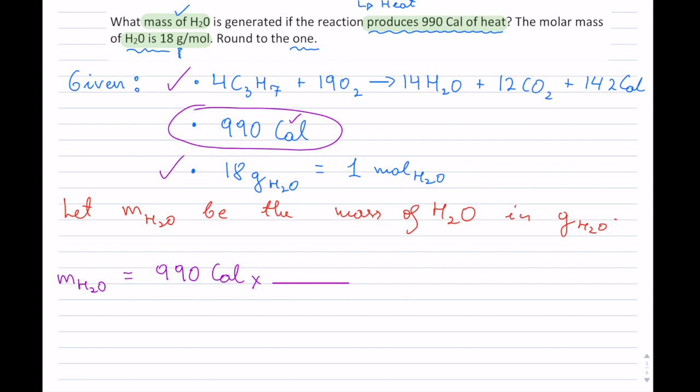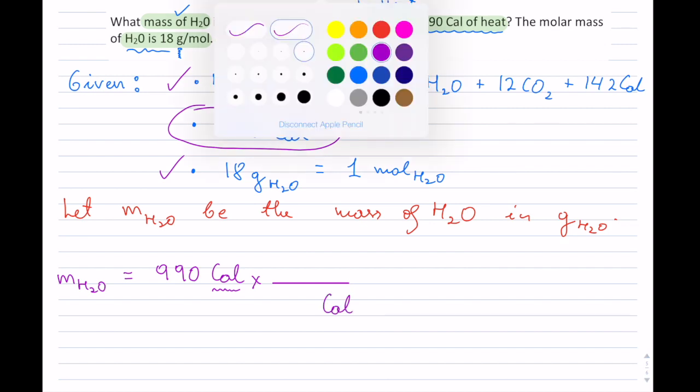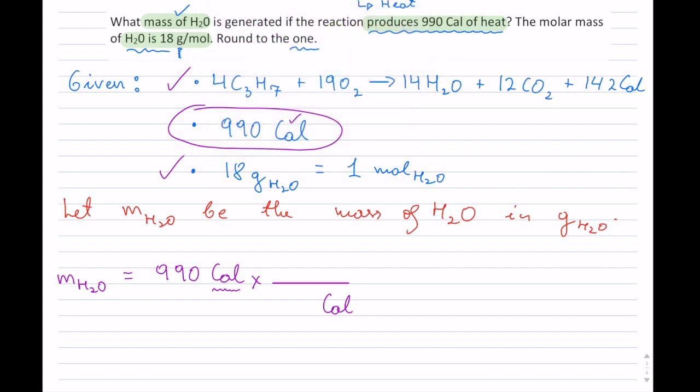So I'm going to write 990 calories. For all of these reactions you're always multiplying and canceling units out. I do not want calories on top, so I'm gonna put calories at the bottom.